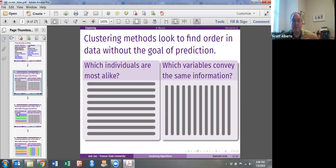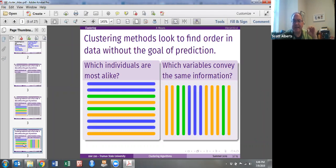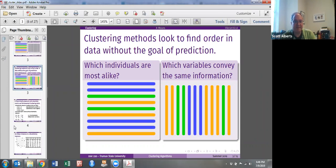Or going the other direction, can we figure out which variables are actually saying the same thing? This would allow us to maybe eliminate those variables and not worry about them so much, so that we can get to a smaller data set that might be easier to understand.